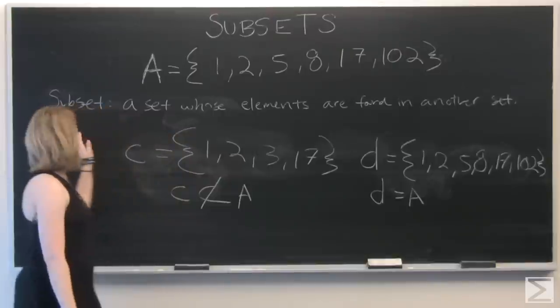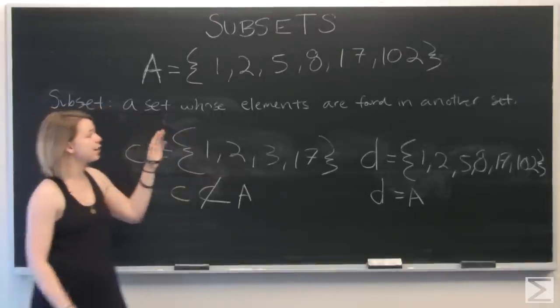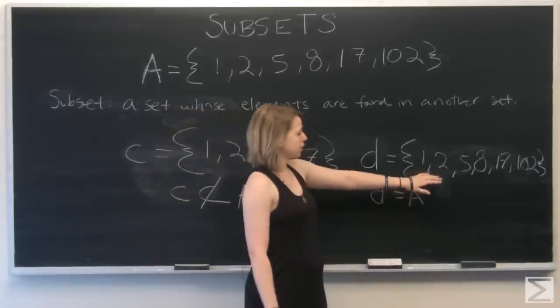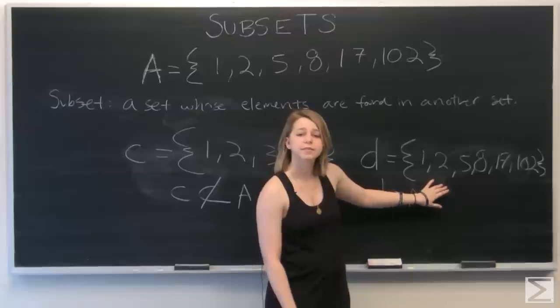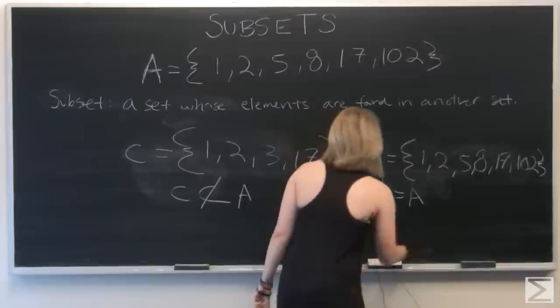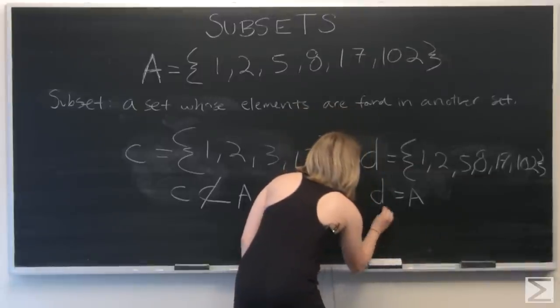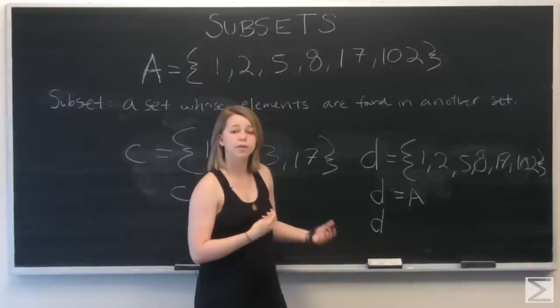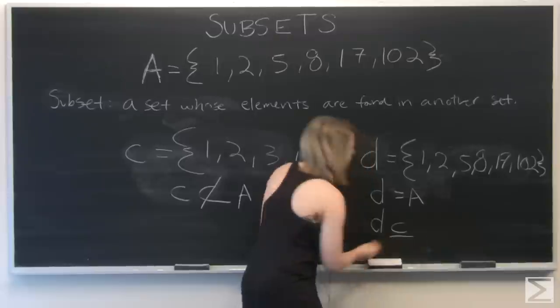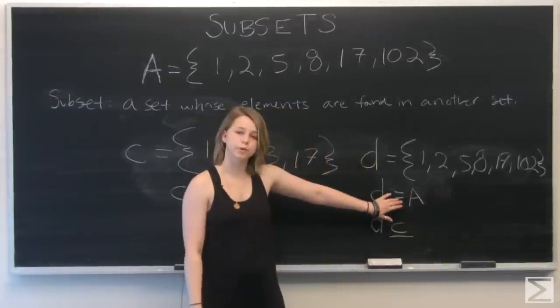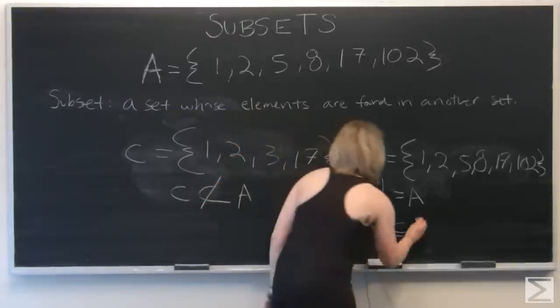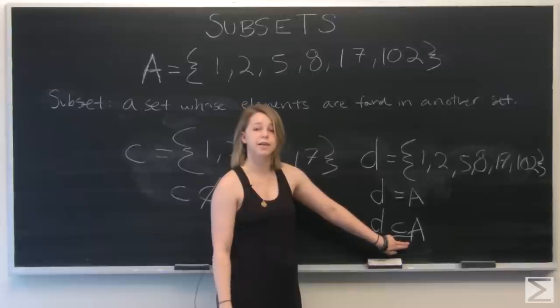But let's look at our definition of a subset again. A subset is any set whose elements are found in another set. All of the elements of set D are found in set A, so D is still a subset of A. This one has a notation that is a little different than the other sets. Because it's also equal to set A, we use our subset symbol as well as a line underneath.